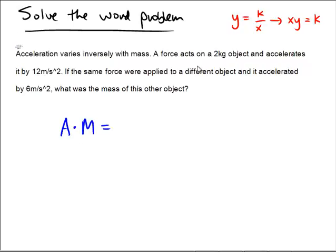So we have a force acting on a mass of 2 kilograms and it's accelerating it by 12 meters per second squared. And then we have the same force being applied to a different object and it accelerated by 6 meters per second squared. So the acceleration is 6. What is the mass of this new object?